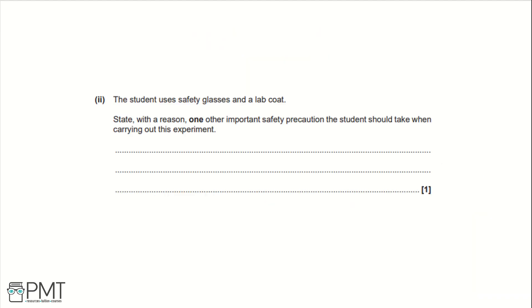Part 2. The student uses safety glasses and a lab coat. State with a reason one other important safety precaution the student should take when carrying out this experiment. For this question, there are three different options that would get you the mark. Saying that compounds may be toxic, poisonous, flammable. All of those three. And then you need to use a fume hood or fume cupboard. That gets you a mark saying both of those things.